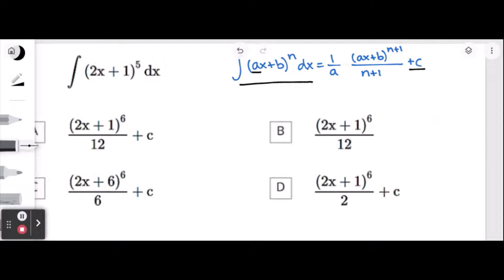If it's definite integral, then that's different. We don't need to add c. Now let's start to solve. Let's follow the rule. 1 over a. a here is 2, which is the coefficient of x. So 1 over 2.